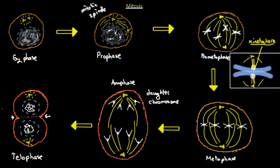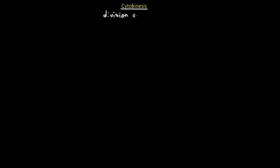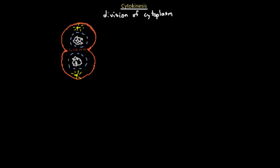Mitosis does not include the actual splitting of the cell — that is a separate process called cytokinesis. Cytokinesis is defined as the division of the cytoplasm. At the end of mitosis, cytokinesis is the process that divides the cytoplasm and produces two daughter cells. There are two processes by which cytokinesis occurs. The first is cytokinesis by furrowing.